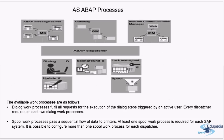The different work processes and services of an SAP system include: the message server, gateway, ICM, ABAP dispatcher, and various types of work processes — dialogue, update, background, lock management (enqueue), and spool. We will look into each of these in detail in upcoming topics.